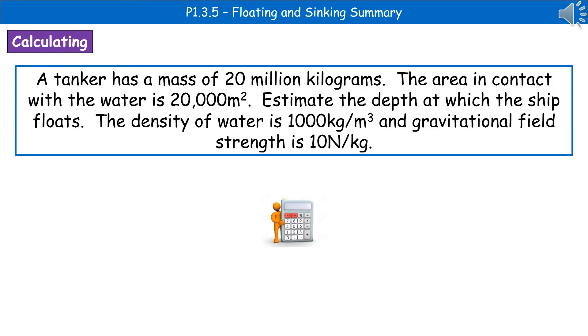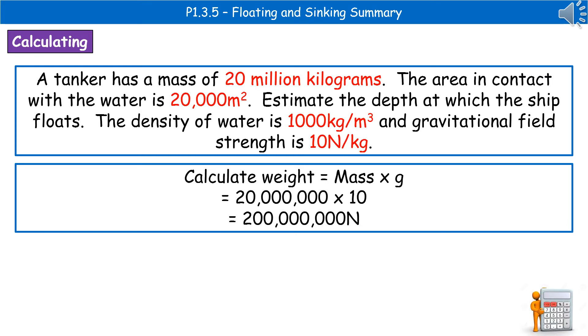To give you an example of the kind of question you could be asked, there's one here for you. A tanker has a mass of 20 million kilograms. The area in contact with the water is 20,000 meters squared. Estimate the depth at which the ship floats. Density of water is 1,000 kilograms per meter cubed, and gravitational field strength is 10 newtons per kilogram. First thing to do in any calculation question is to highlight, underline, circle or jot down the key numbers from the question itself, so you don't have to keep re-reading it all over again.